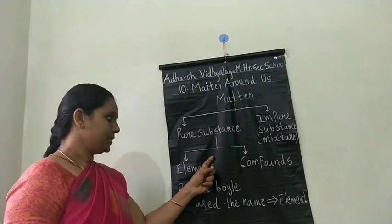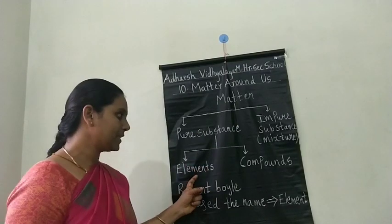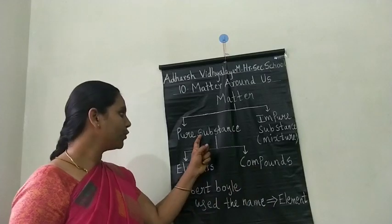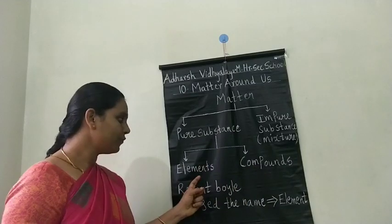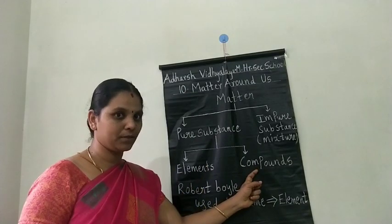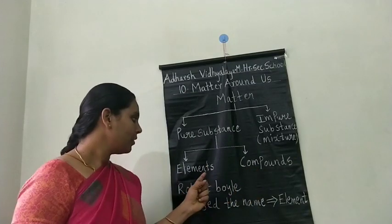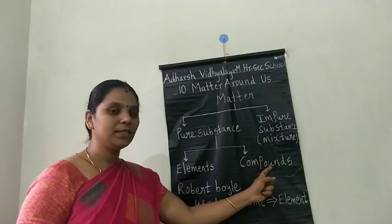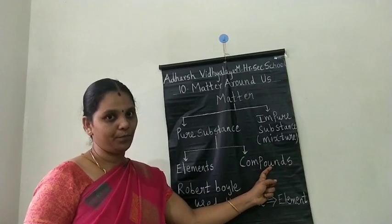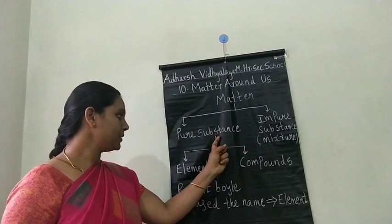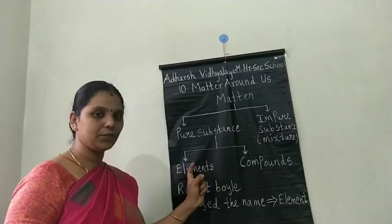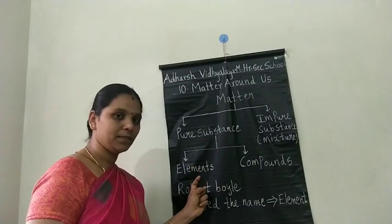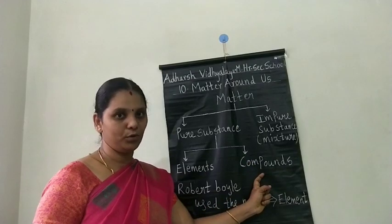The pure substance is further classified into two types: one is an element, and another one is a compound.